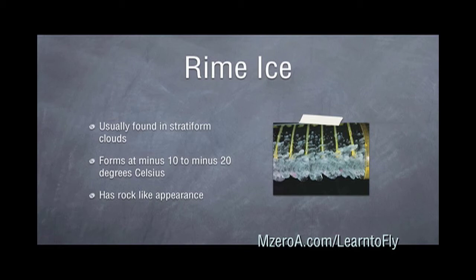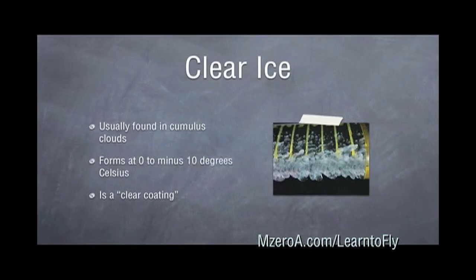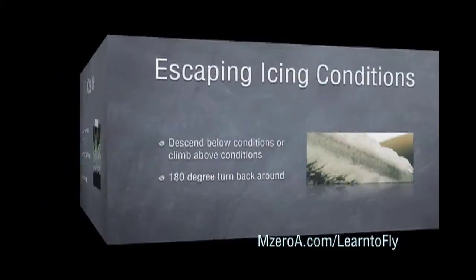This is compared to clear ice which is found in cumulus clouds and forms at 0 to minus 10 degrees Celsius. This has more of a clear coating compared to the rime ice.